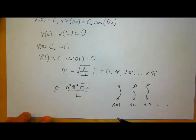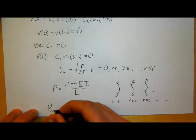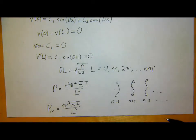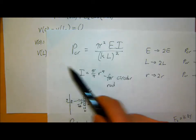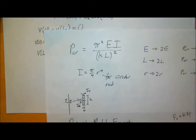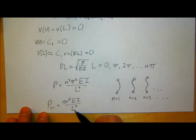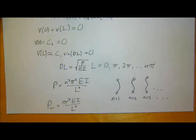It turns out the lowest energy state — the easiest state to buckle into — is when N equals one. So if N equals one, our P critical equals π²EI/L². You may recognize this back from the equation shown before for beam buckling. For this pin-pin example, which is the base case, this is when K equals one, giving π²EI over L². The lowest energy state is that single half sine wave going through the length.